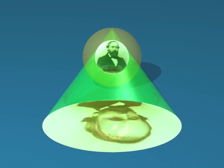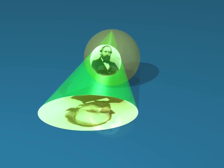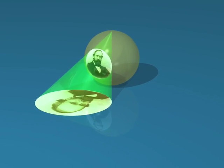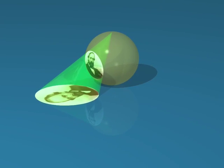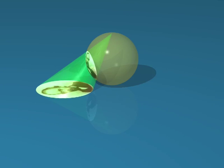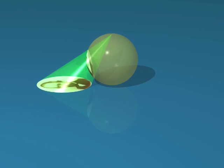We have seen that the stereographic projection sends circles on the sphere not going through the pole to circles in the plane. And now we are going to prove it.